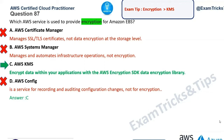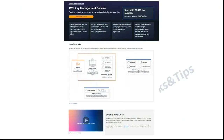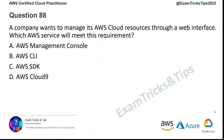AWS KMS, option C, is the correct answer. Your biggest tip: if you get any question related to encryption, choose the answer that includes AWS KMS. Let's look at the documentation — AWS Key Management Service creates and controls keys used to encrypt or digitally sign your data. Review how it works and the key use cases; there's also a video overview that will give you a good understanding of the service.